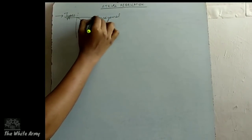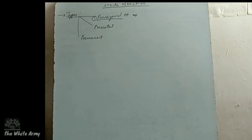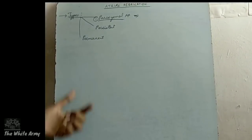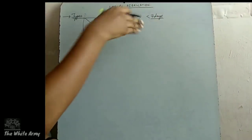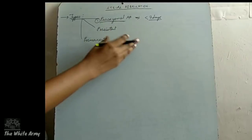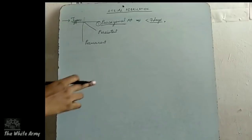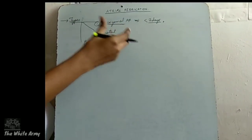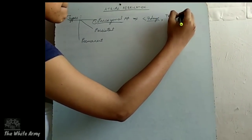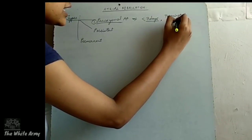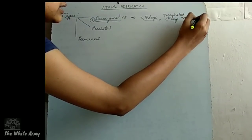Firstly, paroxysmal atrial fibrillation. The episode will last for less than seven days, or the episode can be terminated without any intervention.